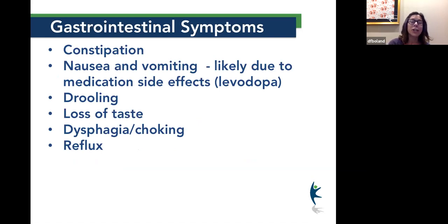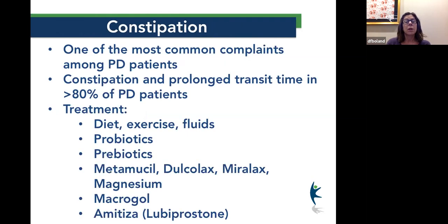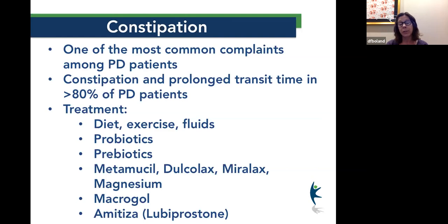GI problems include constipation, nausea, vomiting, drooling, reduced taste, dysphagia, and reflux. Constipation is almost universal in our patients and needs to be addressed. Start with diet, exercise, and fluids; if you've checked those boxes you can try probiotics and prebiotics. Most of my patients move on to MiraLax fairly quickly and I get the best results with that. Magnesium is also great — it helps with the calming effect and also anxiety. There's a product called Calm Magnesium that I give to my patients in the evening and it works really well.